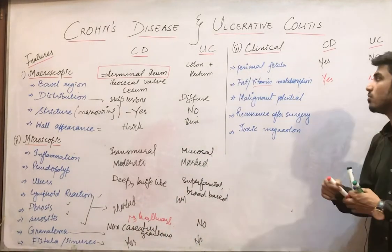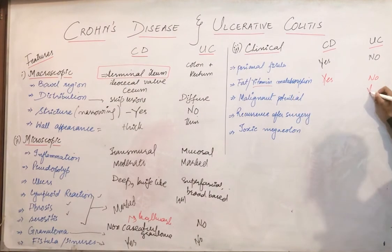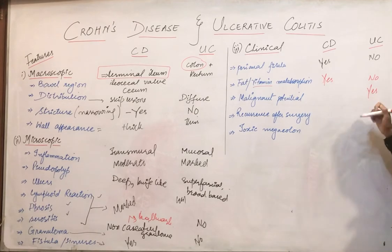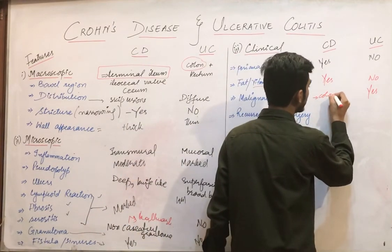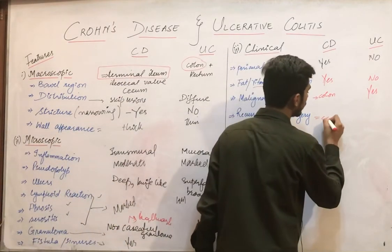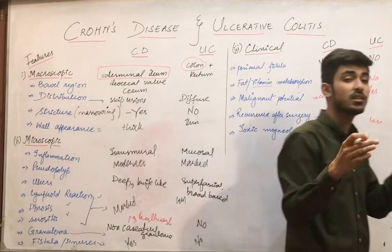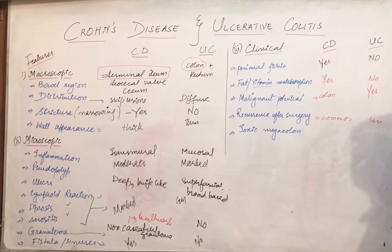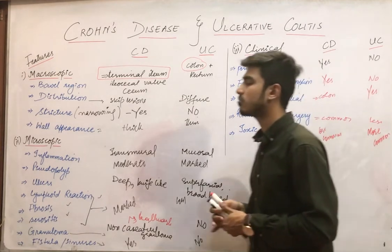Malignant potential is higher in ulcerative colitis because the colon is always involved. In Crohn's disease, malignant potential only arises when the colon is rarely involved. So malignant potential is more common in ulcerative colitis than in Crohn's disease. Recurrence after surgery is more common in Crohn's disease and less common in ulcerative colitis. Toxic megacolon — a dilated large intestine — is a more common complication of ulcerative colitis and less common in Crohn's disease.